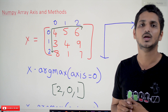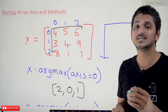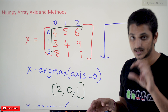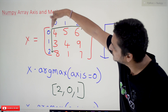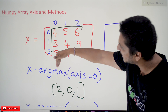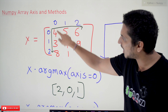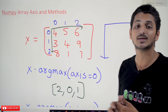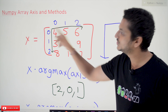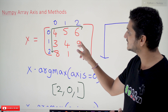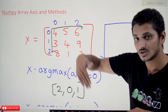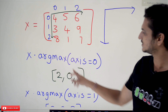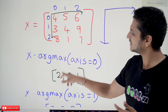By default we think axis=0 applies on the row side and axis=1 on the column side, but there is a small difference. Axis=0 means it will apply in this direction — not on the row side, but on the column side. So for column [4, 3, 8], the maximum is 8 and the index is 2. For [5, 4, 1], the maximum is 5 and the index is 0. For [6, 9, 7], the maximum is 9 and the index is 1. So the axis=0 output is [2, 0, 1].